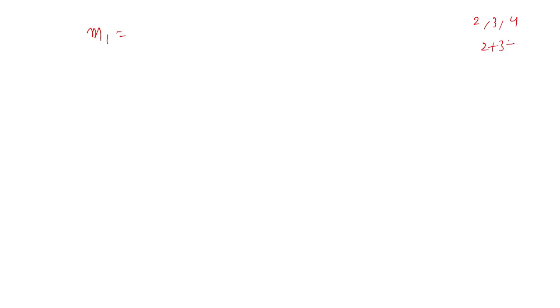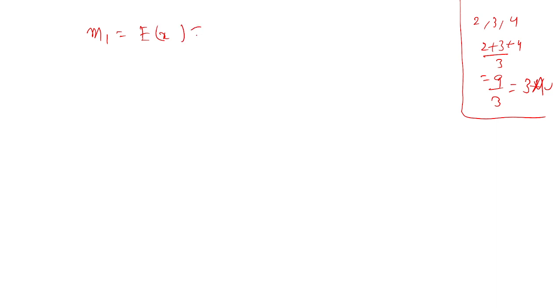For the first moment, denoted m₁, this is the first averaging process. We know that the average of 2, 3, 4 in real numbers is 2 plus 3 plus 4 divided by 3, which equals 9 by 3 equals 3. But in random variables, the mean is defined as the first moment: E(x) equals the sum of x into p(x). This is the first mean.